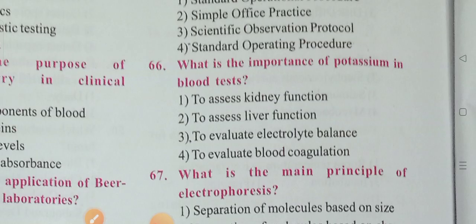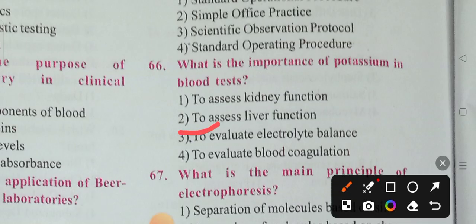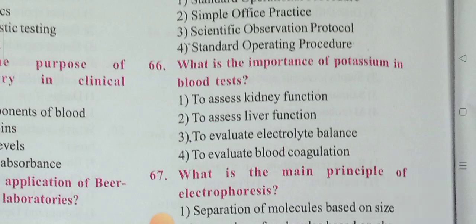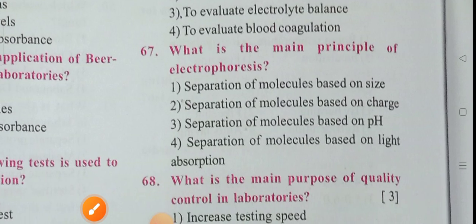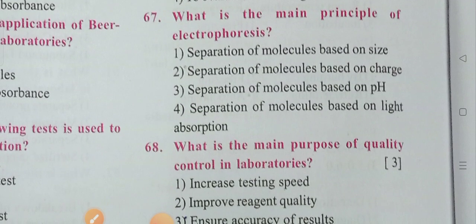Next question: What is the importance of potassium in a blood test? Options include to assess kidney function, to assess liver function, to evaluate electrolyte balance, and to evaluate blood coagulation. Option 3 is the correct answer — to evaluate electrolyte balance. That is why potassium is used in blood tests.